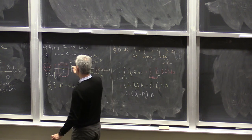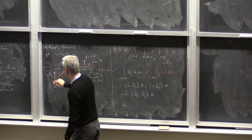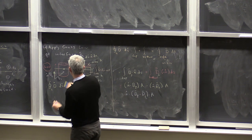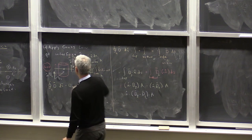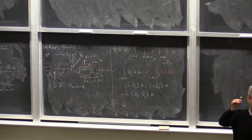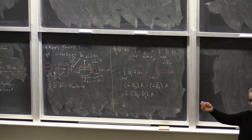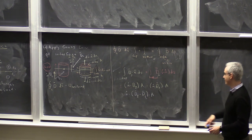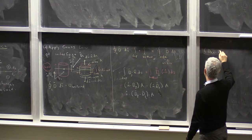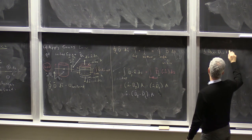This is the normal component of the electric flux density that points normal to the interface—the one that pokes the interface. Normal components poke the interface; tangential components flow along the interface. So the left-hand side is (D2N minus D1N) times A, where D2N and D1N are the normal components of the electric flux density.